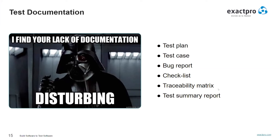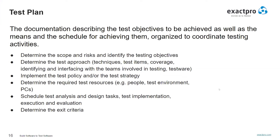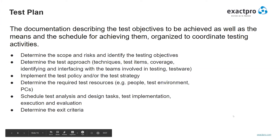The first one usually created is a test plan. Here we determine the test objectives to be achieved, test approach, schedule, and so on. The important thing here is to specify explicit exit criteria — that defines when we could say that we're good to sign off. For example, there should be no bugs with high critical priorities.